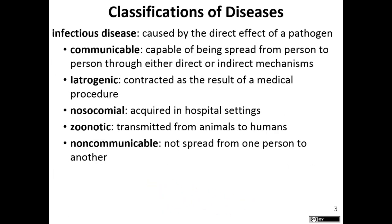An infectious disease is a disease caused by the direct effect of a pathogen. Infectious diseases can be communicable — a communicable infectious disease is able to spread from person to person, not always via direct contact, but also via indirect mechanisms like fomites. A fomite is a non-living material that carries the disease, like a Kleenex or a doorknob, that can then be transmitted from one individual to another.